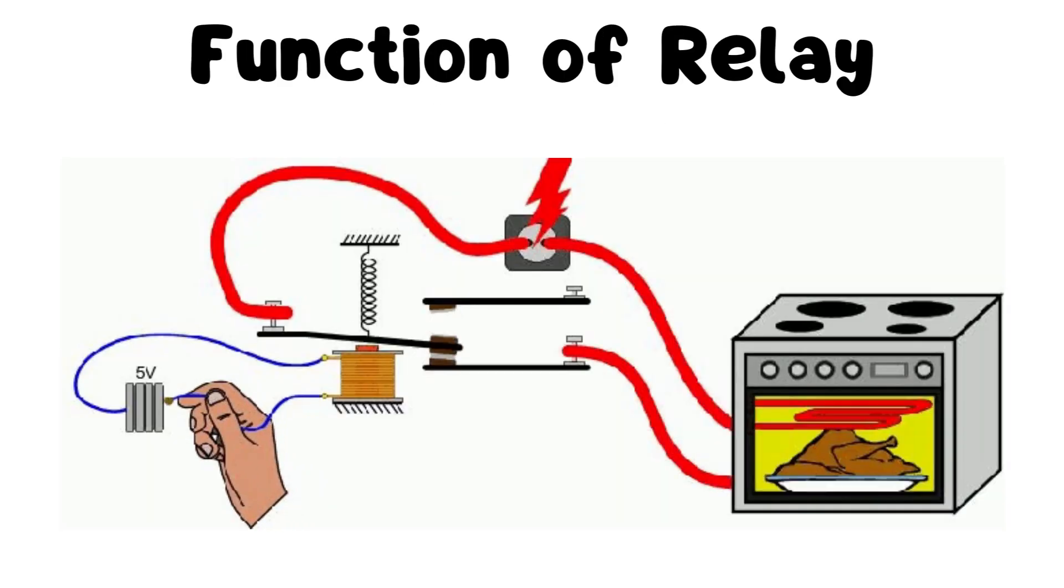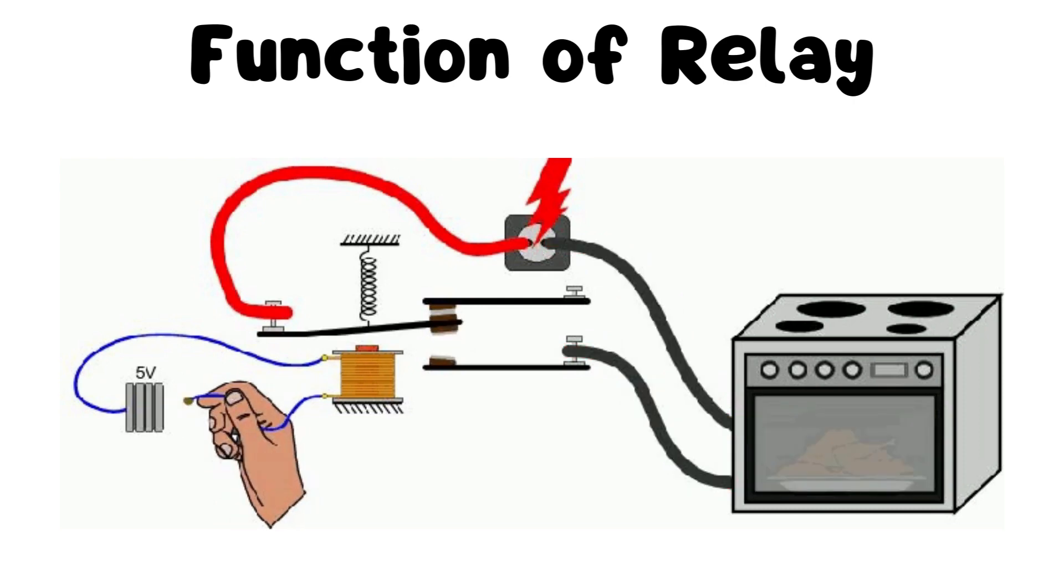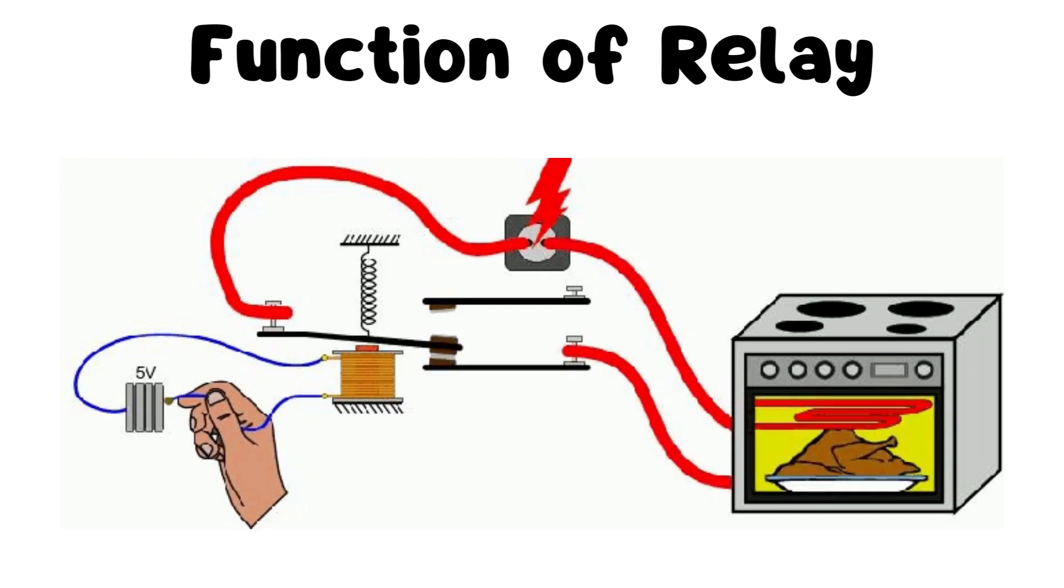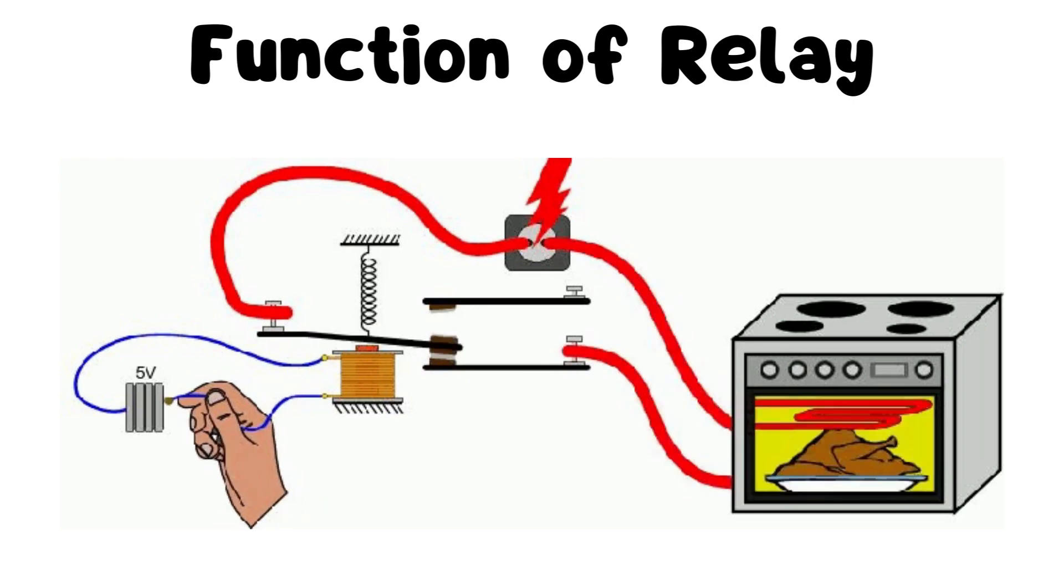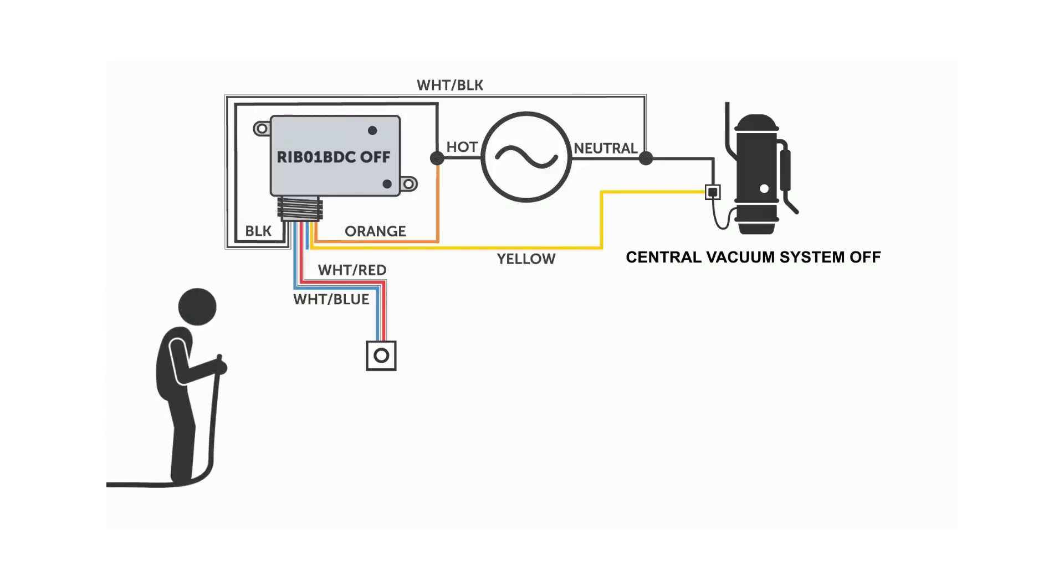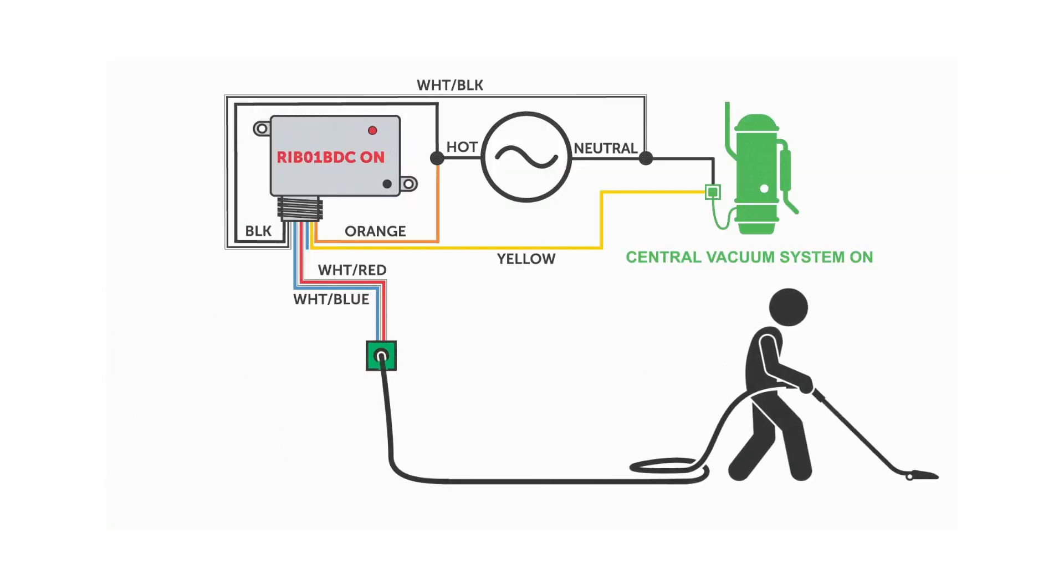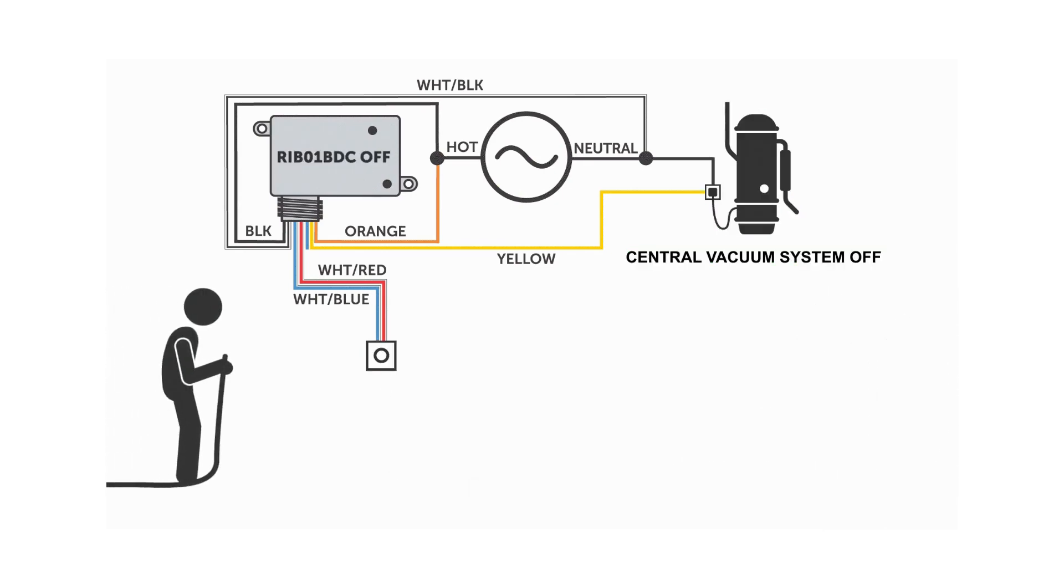Functions: Relays are used to control high-power or high-voltage circuits using low-power or low-voltage signals. They provide isolation between the control circuit and the controlled circuit, which can have different power sources or voltage levels. Relays are commonly used for applications such as switching on/off lights, motors, valves, and solenoids, as well as in protection systems and automation processes.